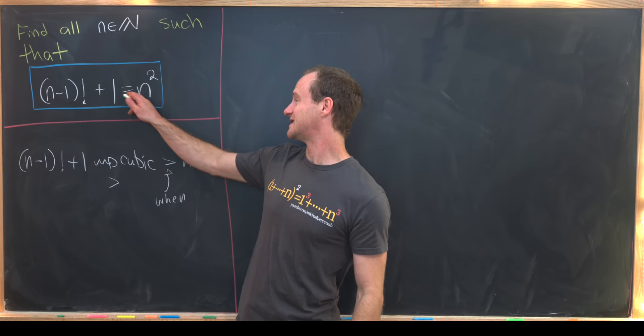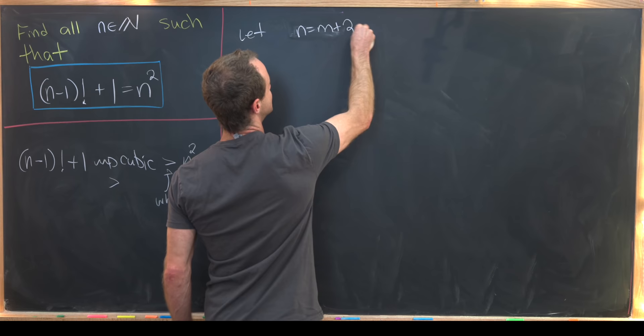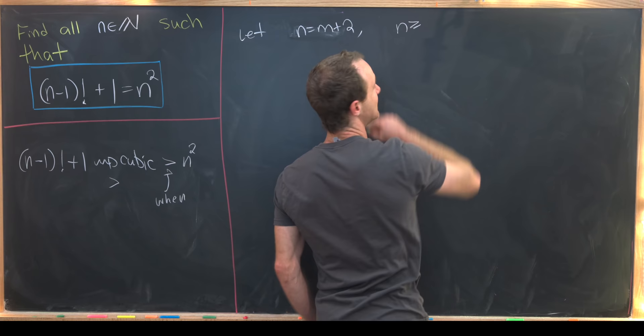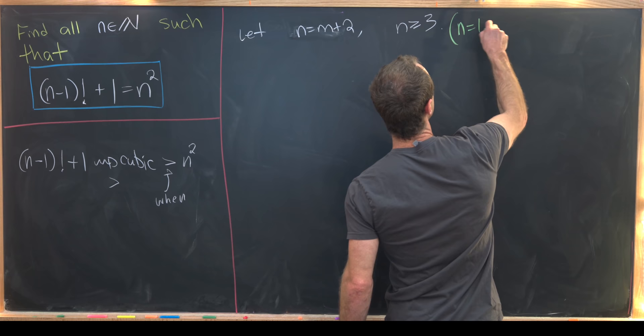Well we're going to use one more trick and that is we will symmetrize this equation so the cubic polynomial is a little bit nicer. Okay so let's jump into this. So let's let n equal m plus 2 and I want to point out this only works for n values bigger than or equal to 3. So that means we'll have to check the n equals 1 and the n equals 2 case on their own.